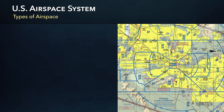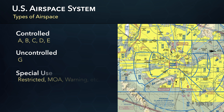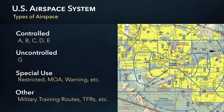Airspace can be divided into controlled, uncontrolled, special use, and other. Airspace designation is arrived at by considering the density of aircraft, the types of operations, the level of safety required, and the national and public interest.